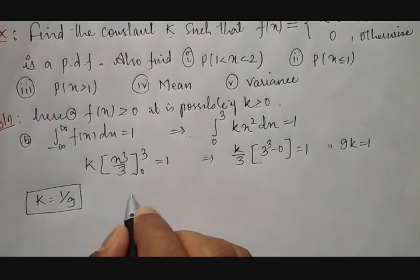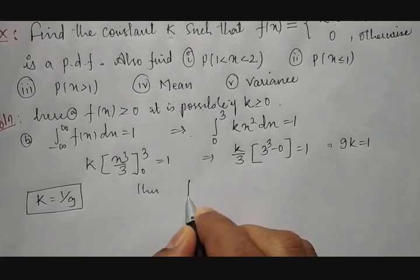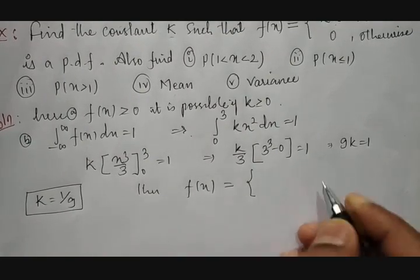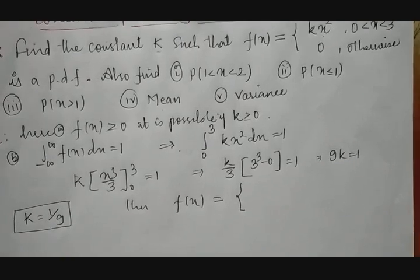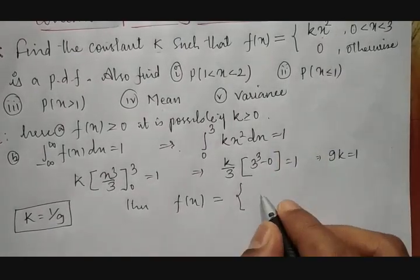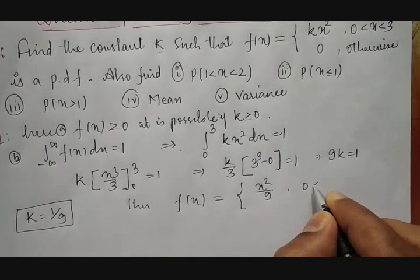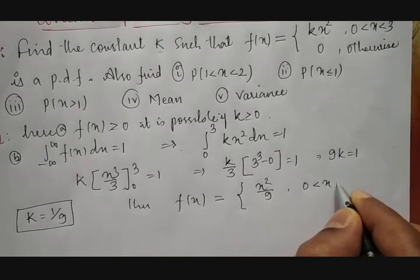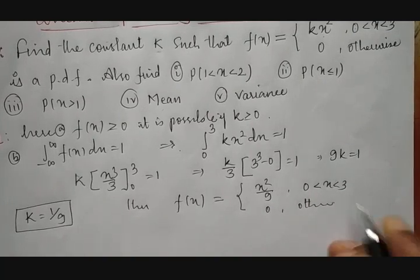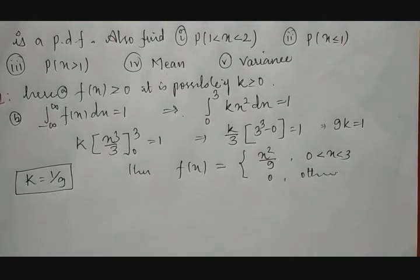We got the value of k = 1/9. So the given function becomes f(x) = x²/9 for x between 0 and 3, and 0 otherwise.